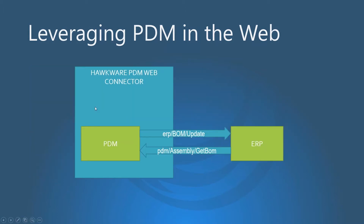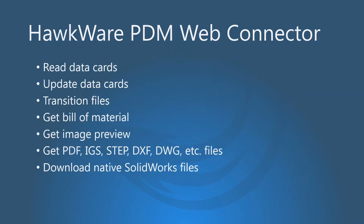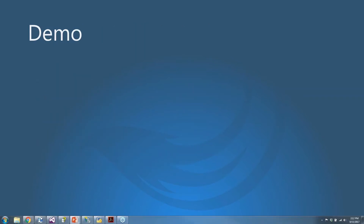Our team has created a PDM web connector to allow customers to interact with PDM via the web. It allows you to request resources in PDM directly by using a URL. This is a platform to build custom integrations utilizing the web, and it opens up a lot more opportunities. Many modern ERP systems have mechanisms to access information in other systems directly by specifying URLs — we've removed the need for a web application altogether and created the integration between PDM and ERP directly. The ERP system can read and write information directly to PDM without any custom development. With the Hawkware PDM web connector, you can read and update data cards, transition files, get bill of material, get image preview, get any file format you want, and download native SOLIDWORKS files — all done via the web.